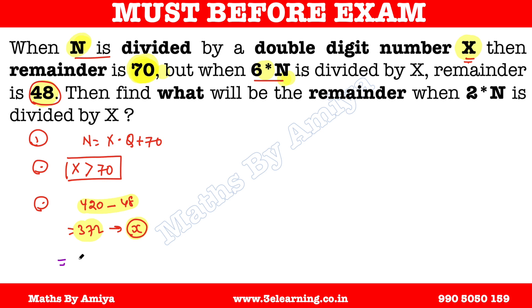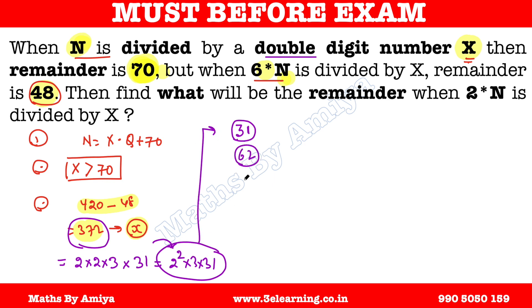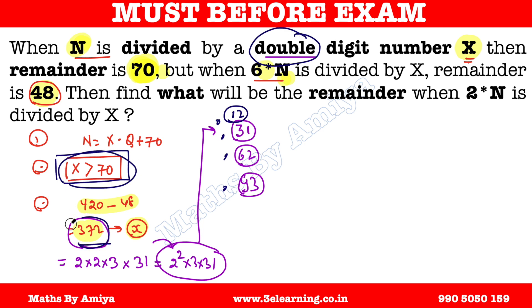Now, 372 equals 2 squared times 3 times 31. The double-digit factors of 372 are: 12, 31, 62, and 93. But the condition says X must be greater than 70 and be a double-digit number. Among all double-digit factors of 372, only 93 satisfies X greater than 70. Therefore, X equals 93.